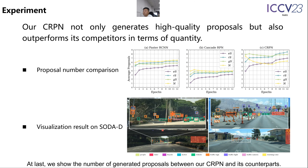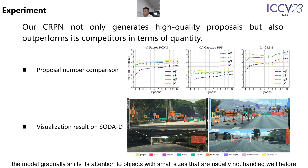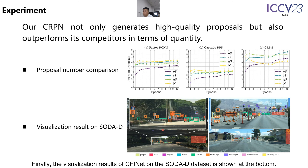Finally, we show the number of generated proposals between our CRPN and its counterparts. Interestingly, CRPN can dynamically shift its focus along the training. At the beginning, the model concentrates more on large objects, which are conducive for early optimization. As training progresses, the model gradually shifts its attention to objects with small sizes that are usually not handled well before. The visualization results of CFINet on the SODA-D dataset are shown at the bottom, and our method handles those extremely small instances well.